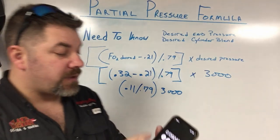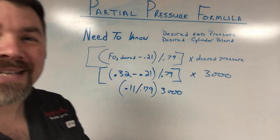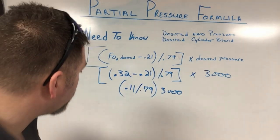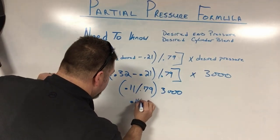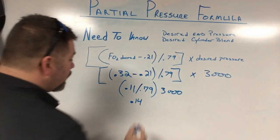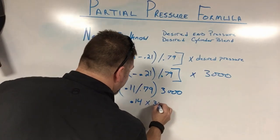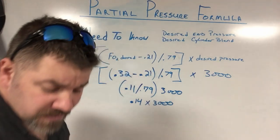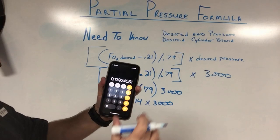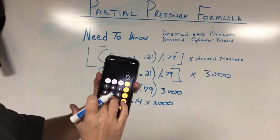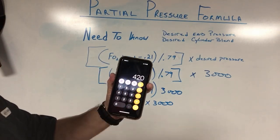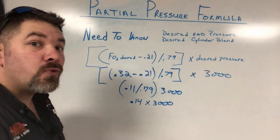Now, we do like to round up. So that 0.139 is actually going to round up to 0.14. So I'm going to write 0.14. Very easy to do. And then of course, I'm going to times that by 3000. So it's very, very easy to do here as well. So take 0.14 times 3000. That's going to give me 420 psi.